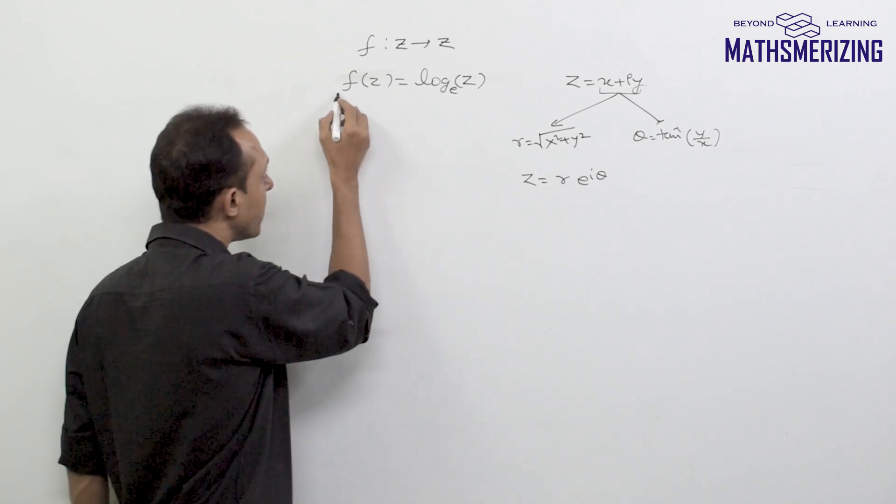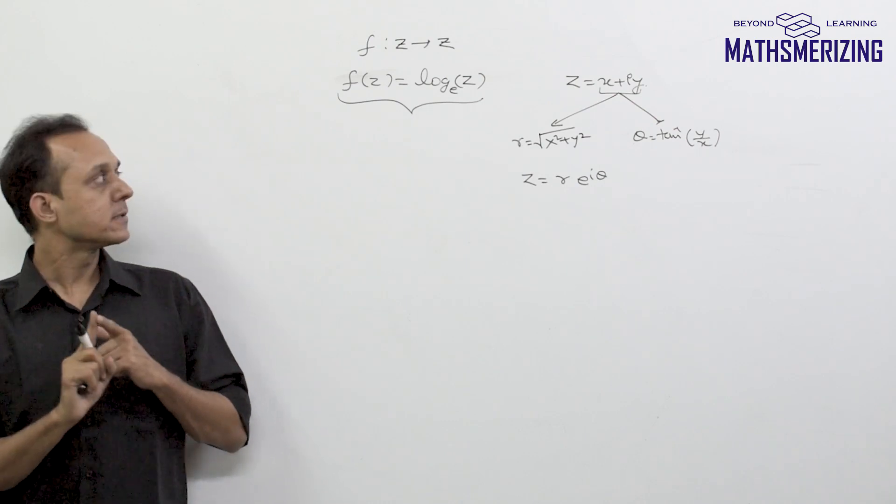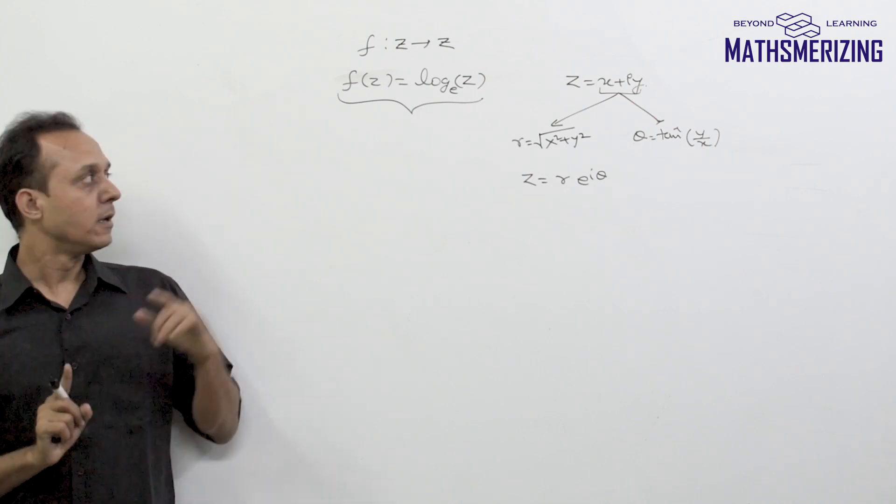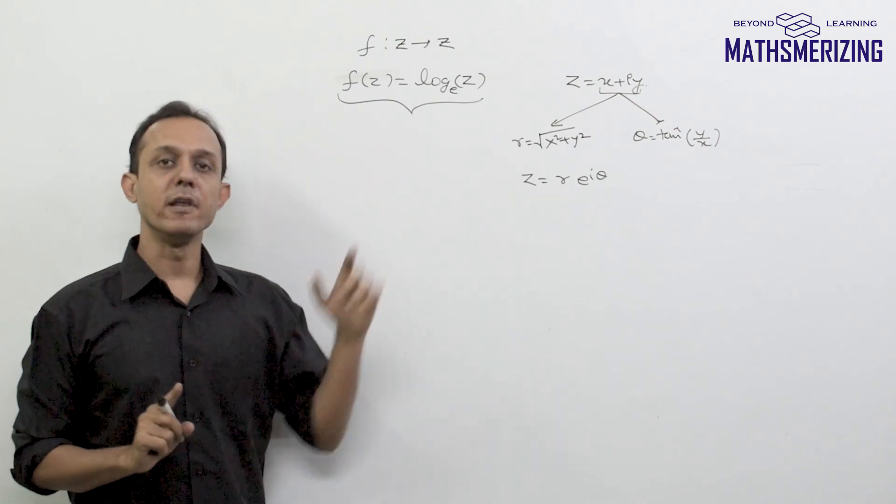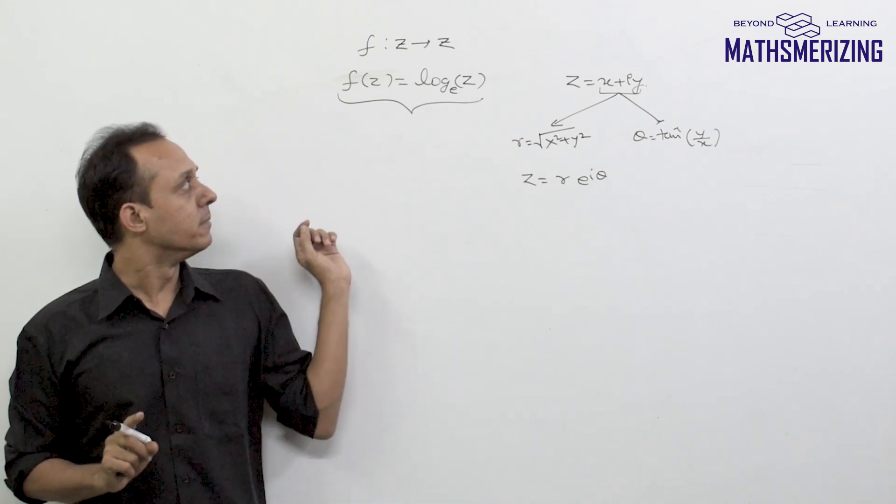Now there is one more thing about this logarithmic function in complex number. So in real numbers or in real functions, we have generally single valued functions. That is for one value of x, there will be only one value of y.